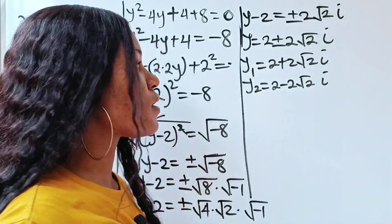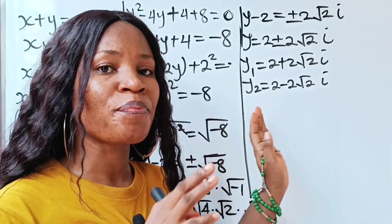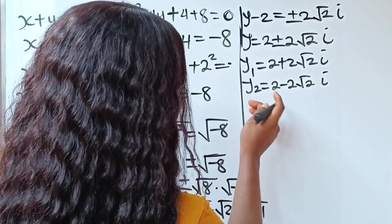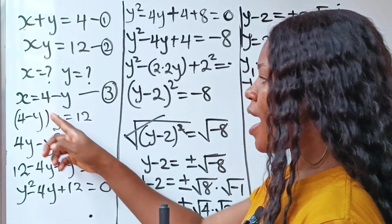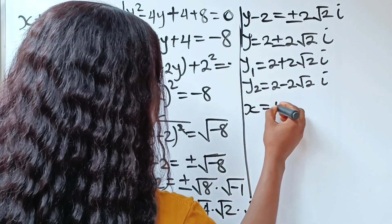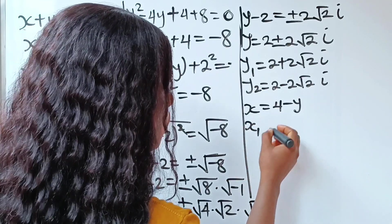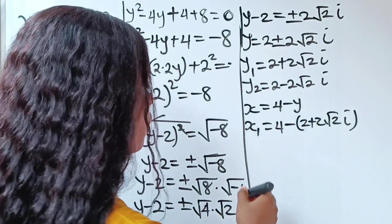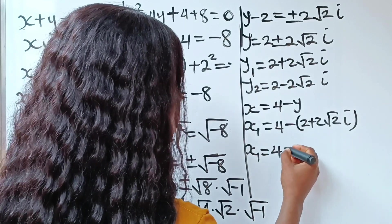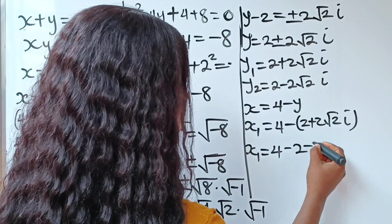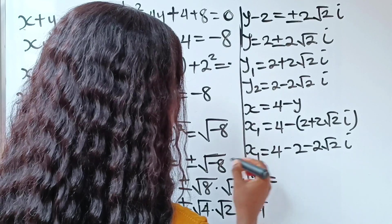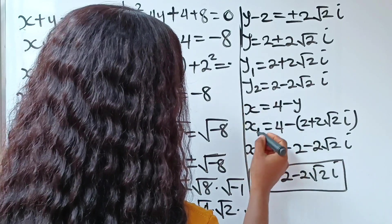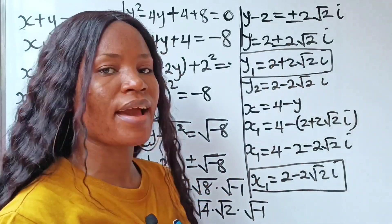Now let's get the corresponding values of x. Recall that x equals 4 minus y. So x₁ equals 4 minus y₁, and y₁ is 2 plus 2√2i. So x₁ equals 4 minus 2 minus 2√2i, which gives x₁ equals 2 minus 2√2i.